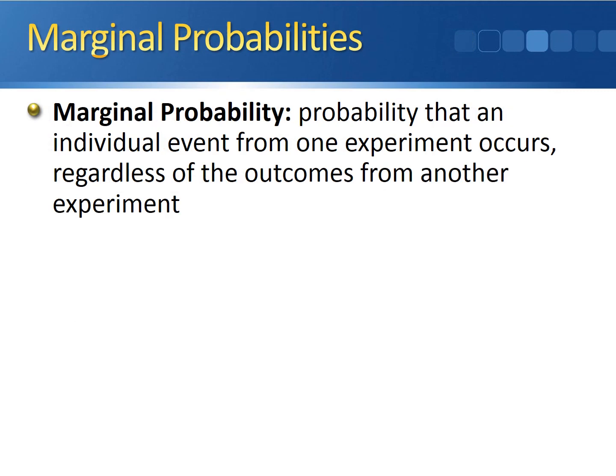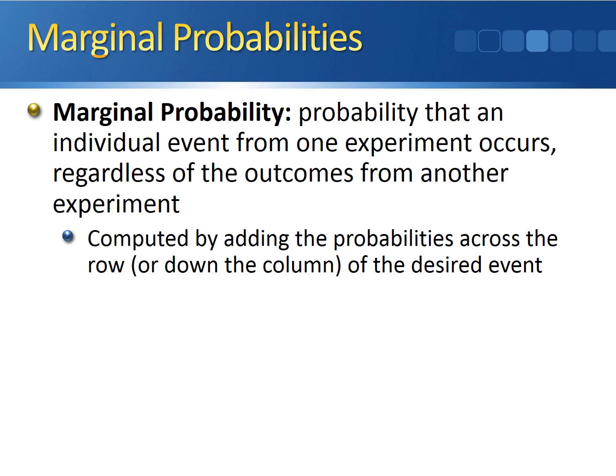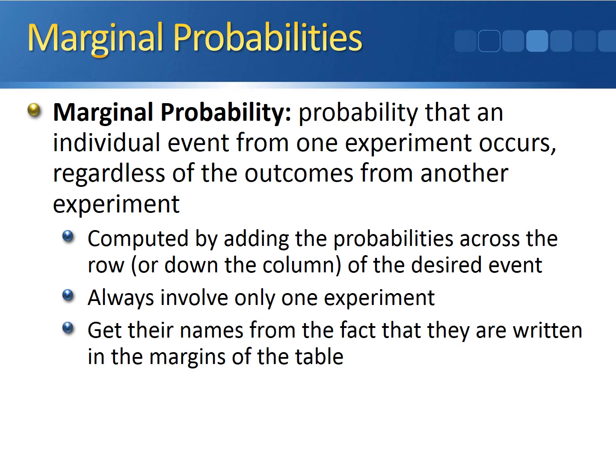The second type of probability is called the marginal probability. The marginal probability is the probability that an individual event from one experiment occurs, regardless of the outcomes from another experiment. Marginal probabilities are computed by identifying the row or column in the table for the desired event and adding up all of the probabilities in that row or column. They get their name from the fact that they are written in the margins of the table.